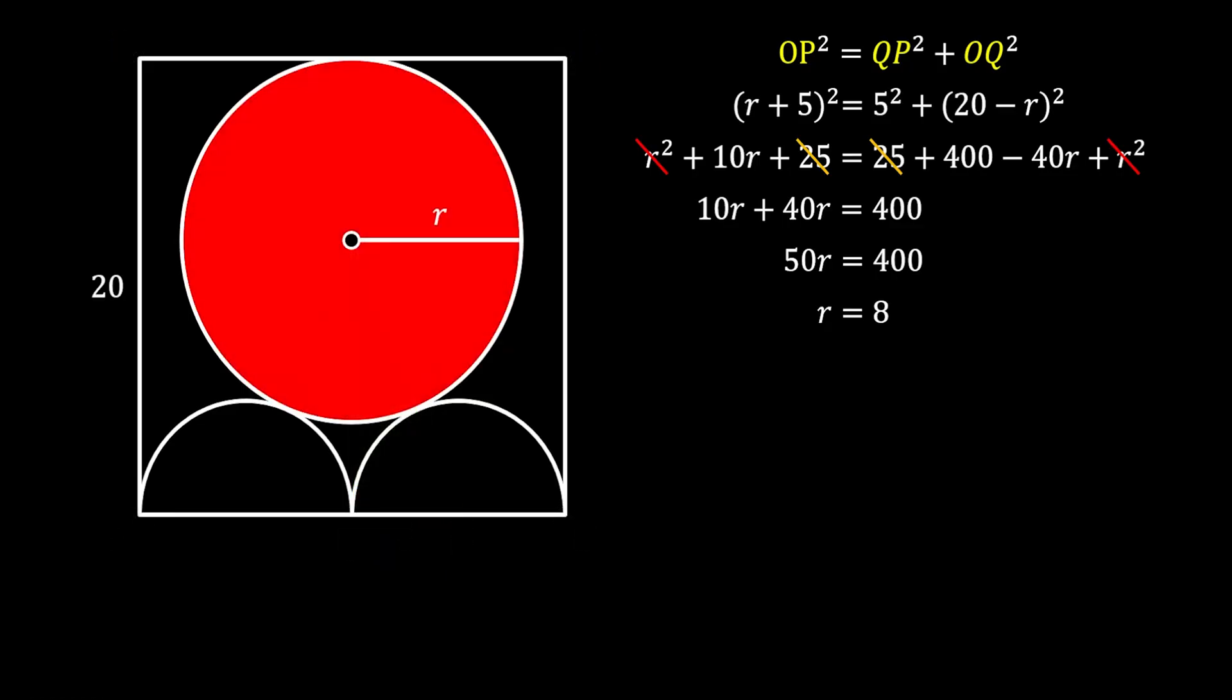Now, remember we're looking for the area of the red circle and the area equals πr². We can substitute the value of r and get that it's 8² times π, which means that the area of our red circle equals 64π, and this is our wonderful solution.